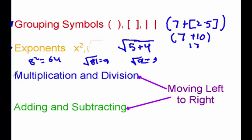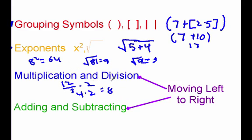After our exponents comes multiplication and division. We want to make sure we're doing our multiplication and division moving from left to right. For example, if we saw something like 12 divided by 3 times 2, I've got 12 divided by 3 here on the left — 12 divided by 3 is 4 — and then I multiply it by 2 to get 8. It is not, I repeat, it is not just do all the multiplication and then do the division. You want to do your multiplying and dividing left to right.